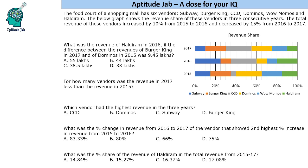The problem states that there is a food court in a shopping mall with six vendors. This graph shows the revenue share of these vendors in three consecutive years — it is a percentage out of the total 100% revenue in each year. The total revenue increased by 10% from 2015 to 2016 and decreased by 15% from 2016 to 2017.